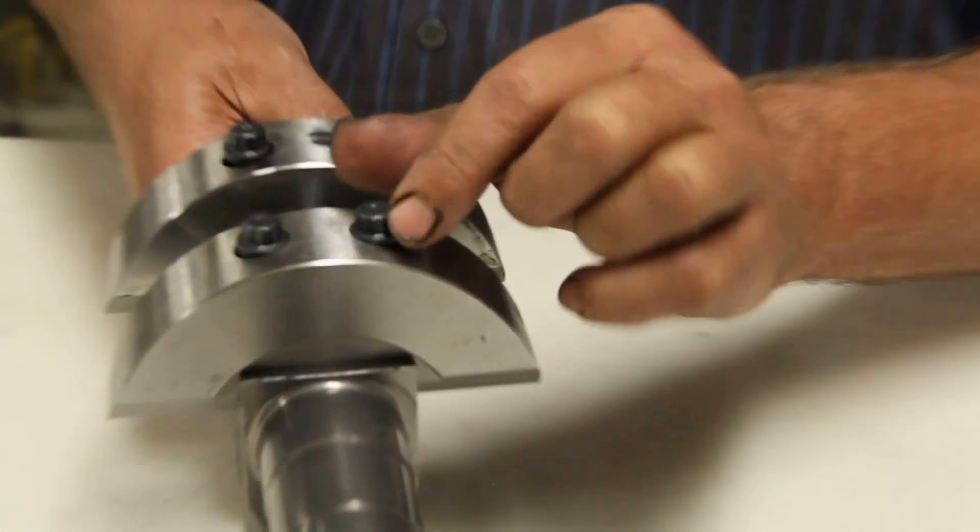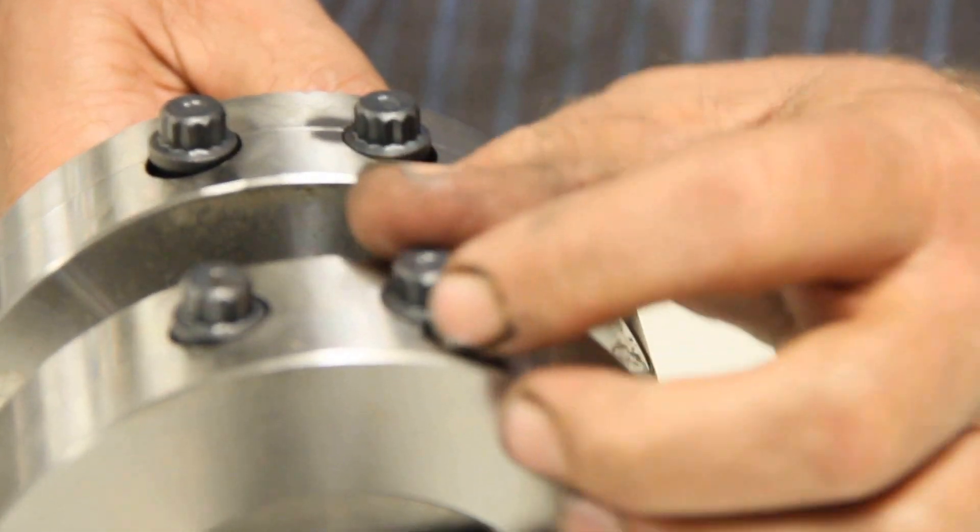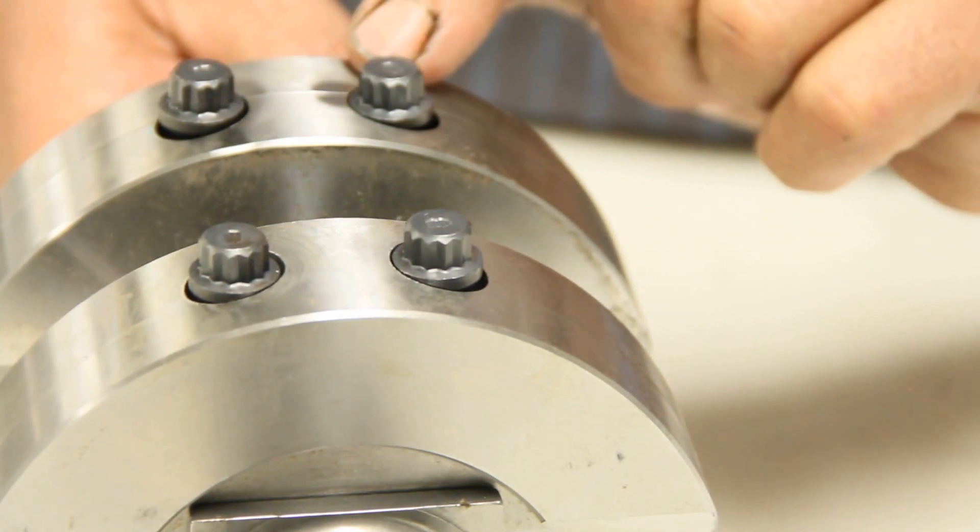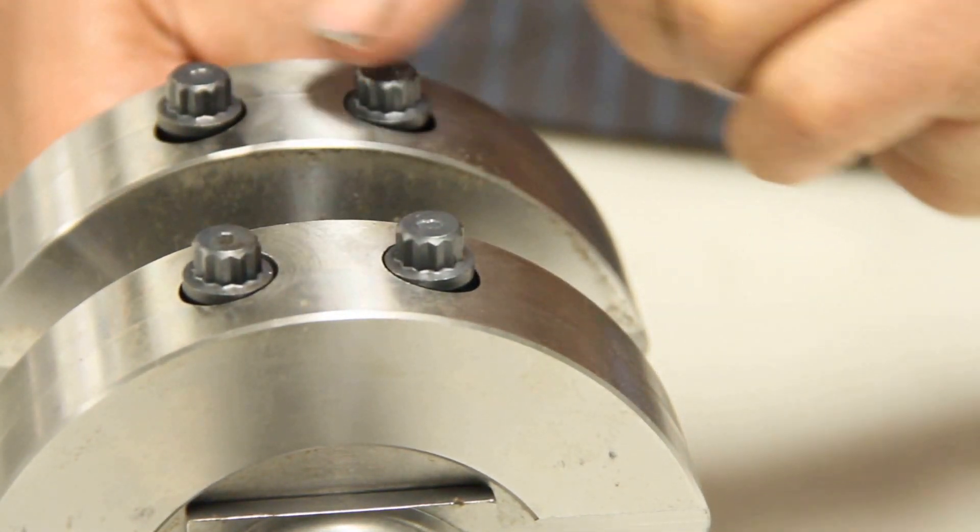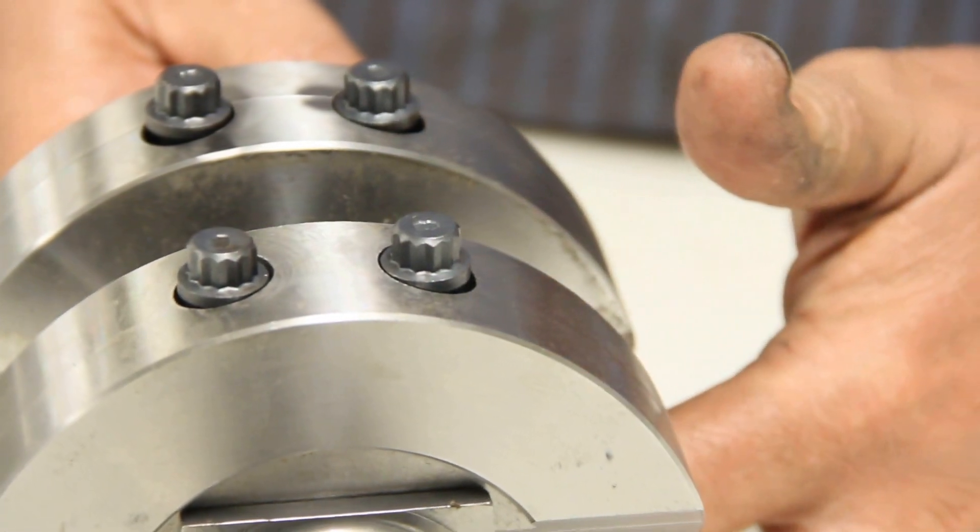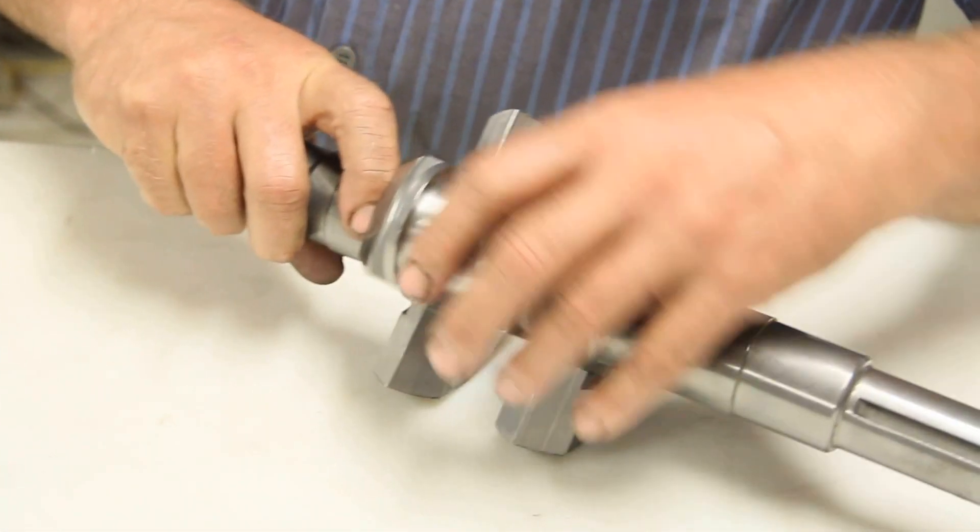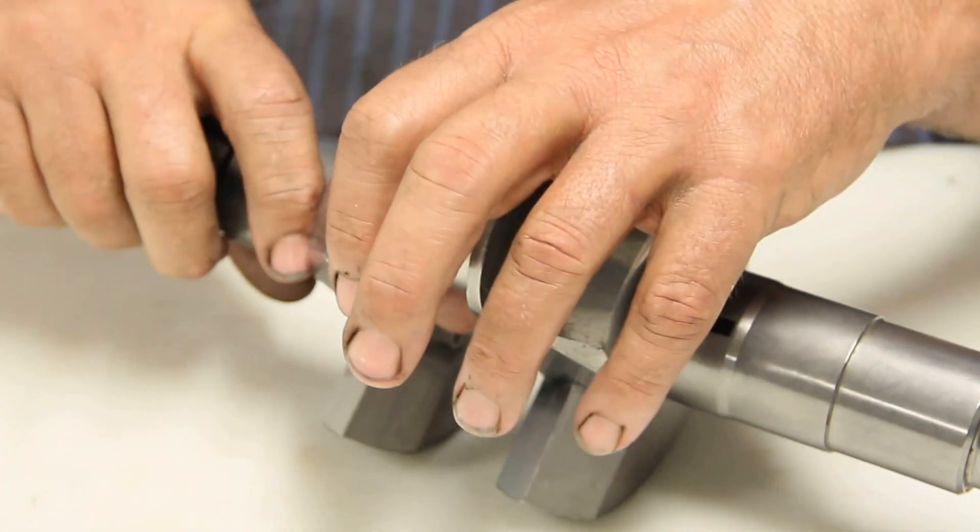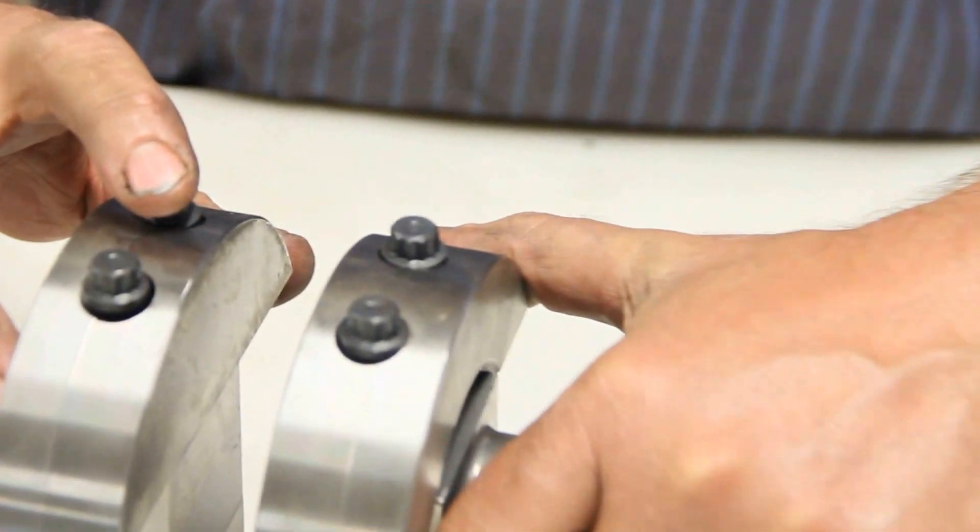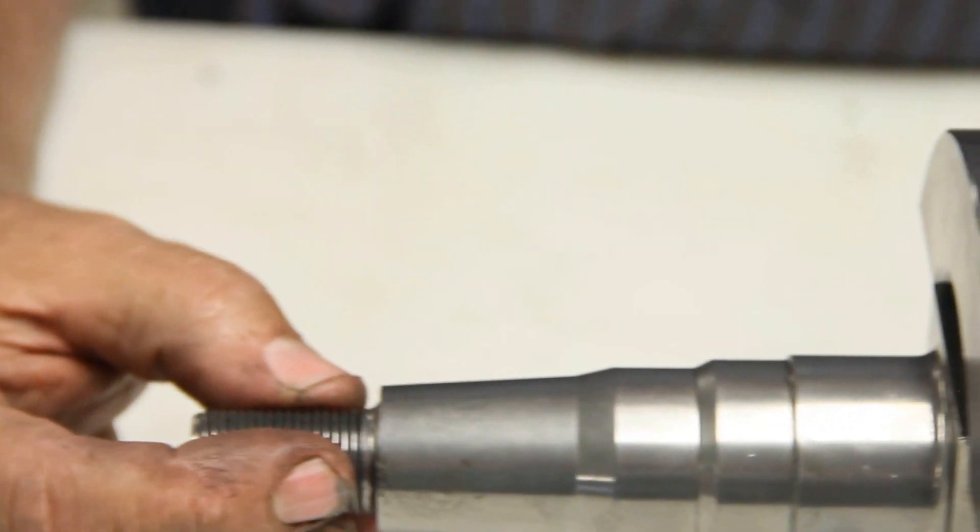And these bolts here, the other thing too, a lot of questions come up, it's on your invoice when you get the crank, but these bolts here take a 7/16ths 12 point socket, and these bolts here are torqued to 45 foot-pounds, a little bit different. Like the crankshaft on the connecting rod, those bolts get torqued to 20 foot-pounds, but these here are torqued to 45 foot-pounds.